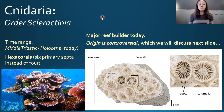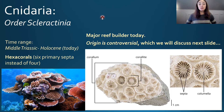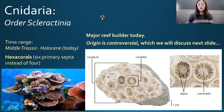Some think scleractinians are more evolved groups of rugose corals, but most paleontologists consider them a separate lineage because they are hexacorals, meaning their septa insert 60 degrees from each other, with numbers of septa divisible by six rather than four as in rugose corals. The most likely explanation is that a group of soft-bodied sea anemones — previously not preservable — evolved the ability to calcify their skeletons, giving rise to scleractinians, which are the only order of corals alive today.